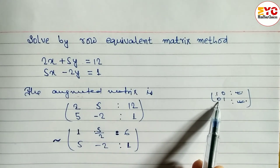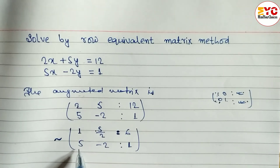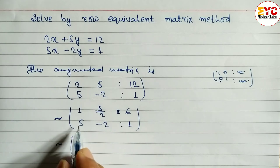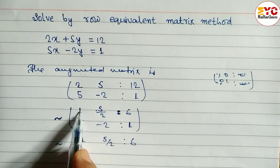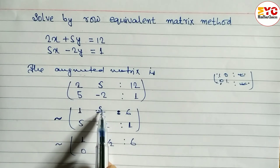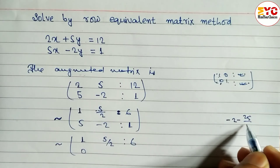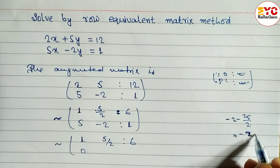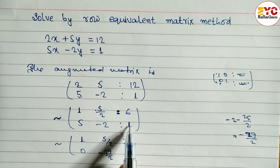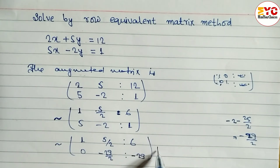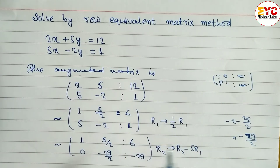After this we need 0 in the first column of row 2. How to get 0? We multiply row 1 by 5 and subtract. Row 1 stays the same: 1, 5/2, 6. Now multiply row 1 by 5 and subtract from row 2. 5 minus 5 gives 0. For the next entry: minus 2 minus 25/2 gives minus 29/2. And 1 minus 30 gives minus 29. So the operation is R2 → R2 minus 5R1, and R1 → (1/2)R1.